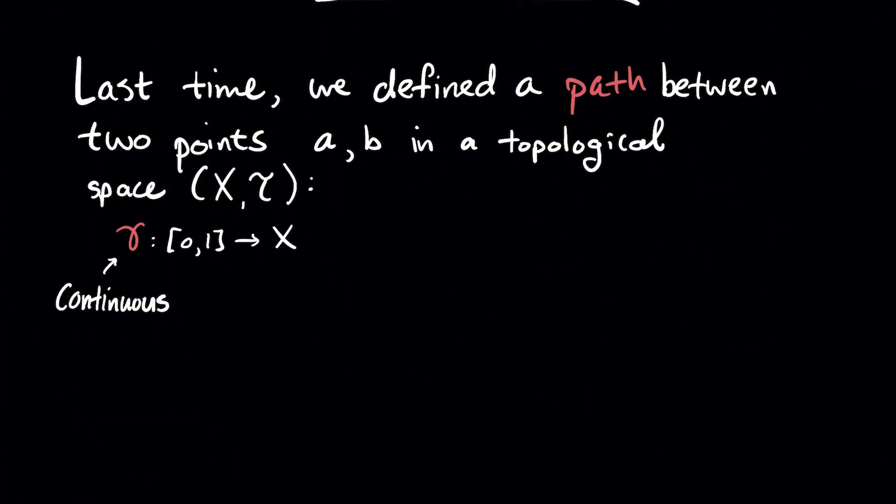It outputs a point in your topological space such that gamma of 0 is A, that says A is the initial point on the path, and gamma of 1 is B which says B is the ending point on the path.